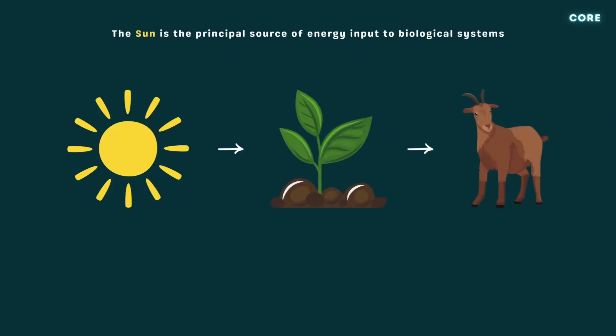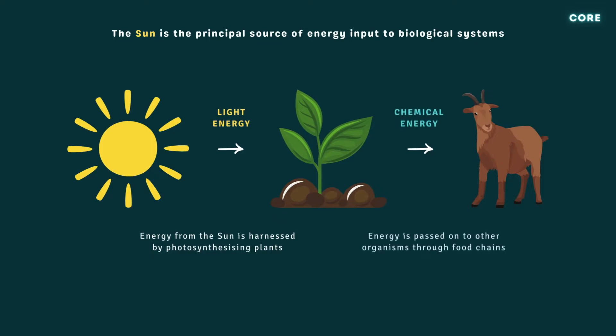The sun is the principal source of energy input to biological systems. Photosynthesising plants harness sunlight to produce chemical energy, which is stored in molecules like carbohydrates, proteins, and fats, and then passed on from organism to organism through food chains.